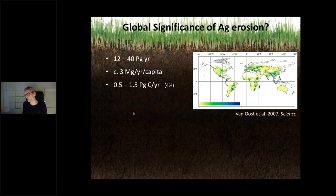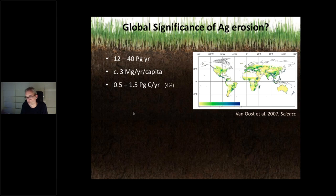Because there is organic carbon associated with soil particles, if we connect the carbon content to the eroded soil, we end up with an estimate that annually about 0.5 to 1.5 petagrams of carbon are lost from our fields where we produce our food. That's about four to five percent of the annual emissions from combustion of fossil fuels — quite significant.